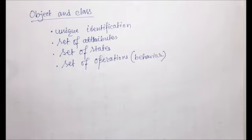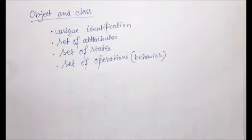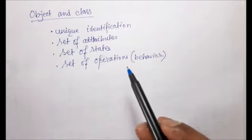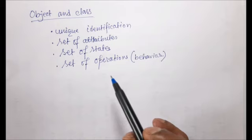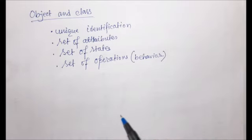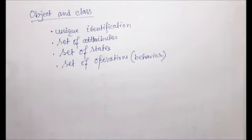Unique identification means every object has a unique name by which it can be identified in the system. Set of attributes means every object has a set of properties we are interested in. Set of state means the value of attributes of an object constitutes the state of the object — every object has a number of states, but at a given time it can be in only one of those states. Set of operations means behavior — the externally visible actions an object can perform. When an operation is performed, the state of an object may change during execution.